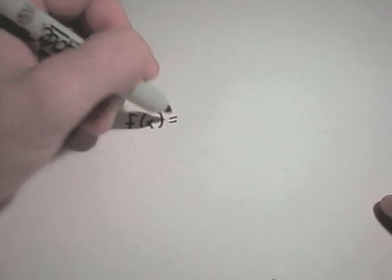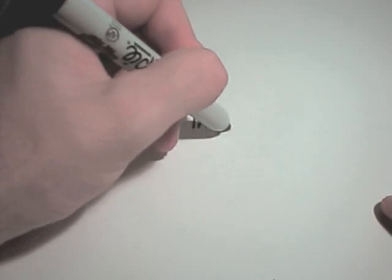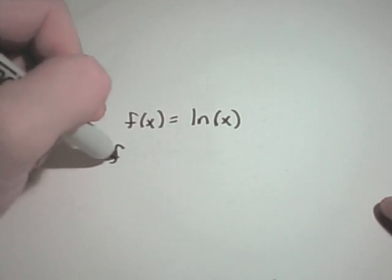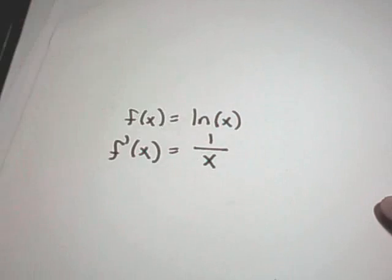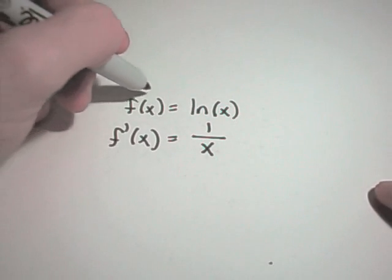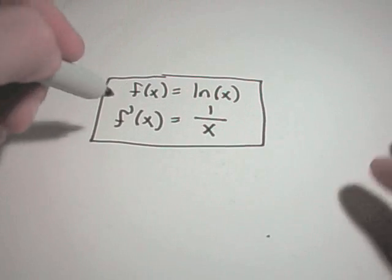Suppose you have f(x) equals ln(x). The derivative of this, you simply get 1 over the variable, which is x. So there's one of the basic ones.